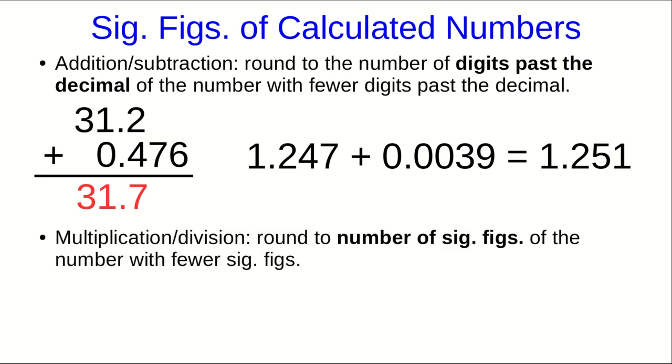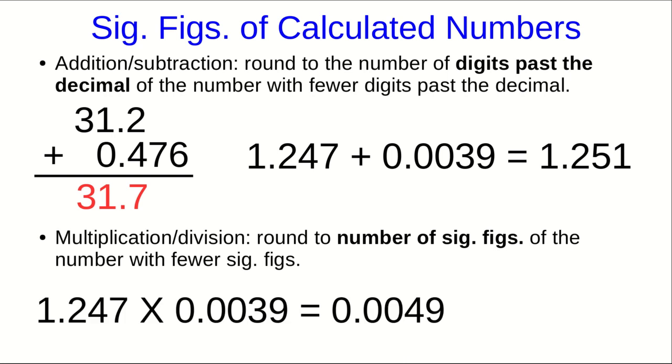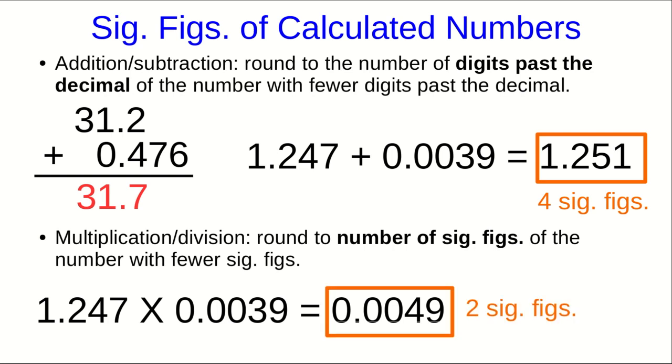Multiplication and division is slightly simpler. Here we round to the number of significant figures, not digits past the decimal, the number of significant figures of the number that has fewer significant figures. So if I use those same numbers 1.247 and 0.0039 and I multiply them I get an answer that has two significant figures. I want you to notice in one case adding the two numbers I got four significant figures multiplying the same two numbers I got two significant figures. You should work through the rules and verify that you see why.